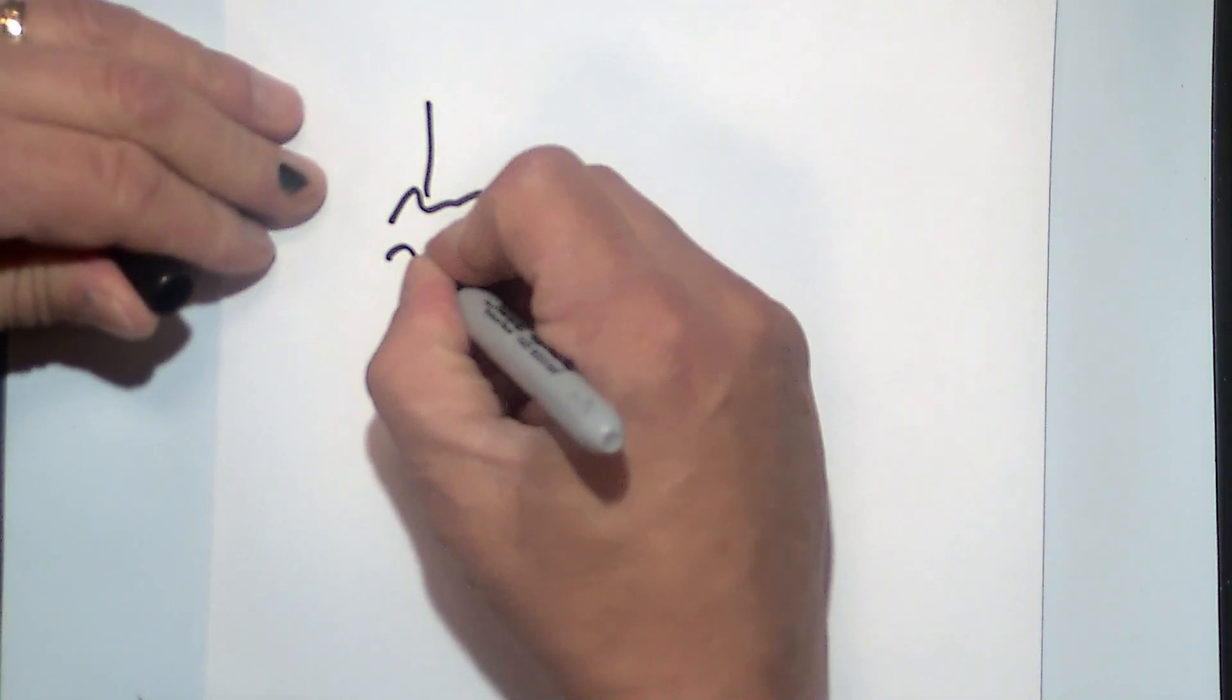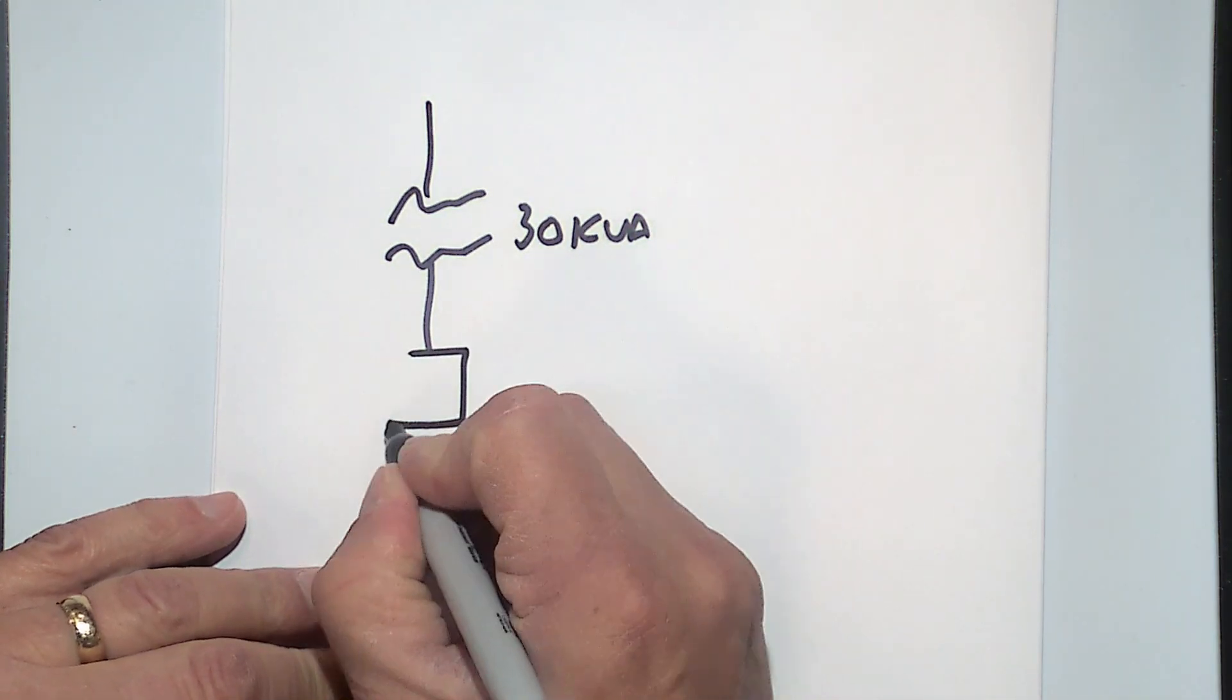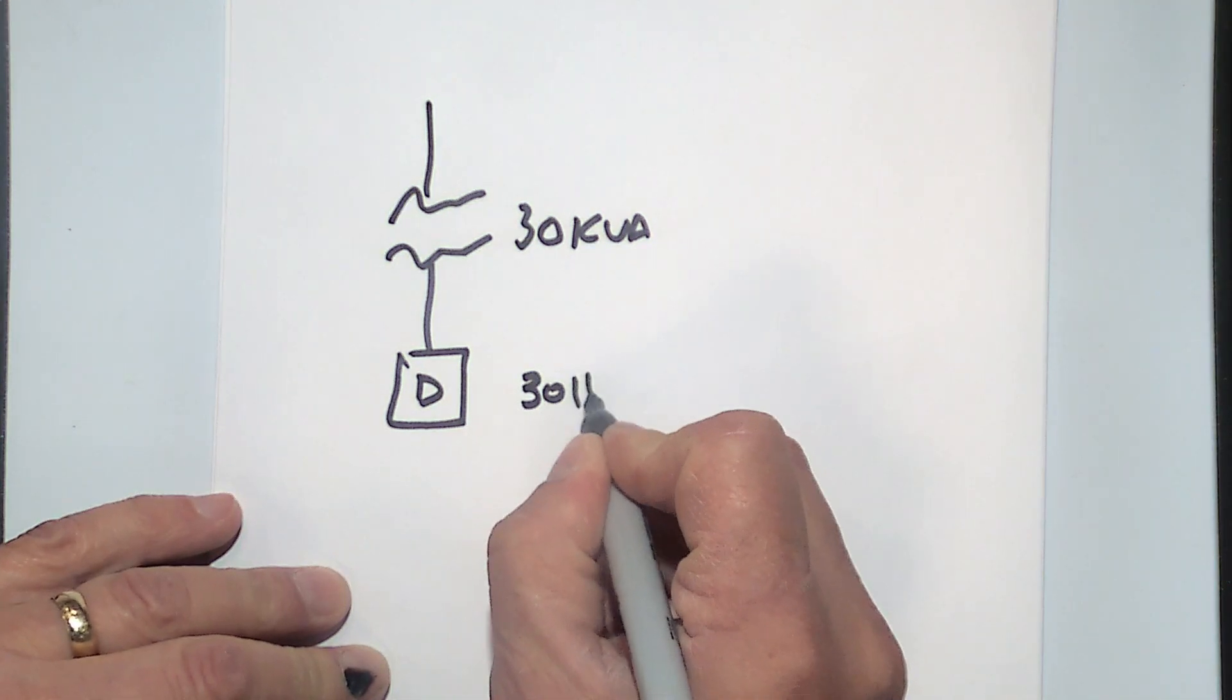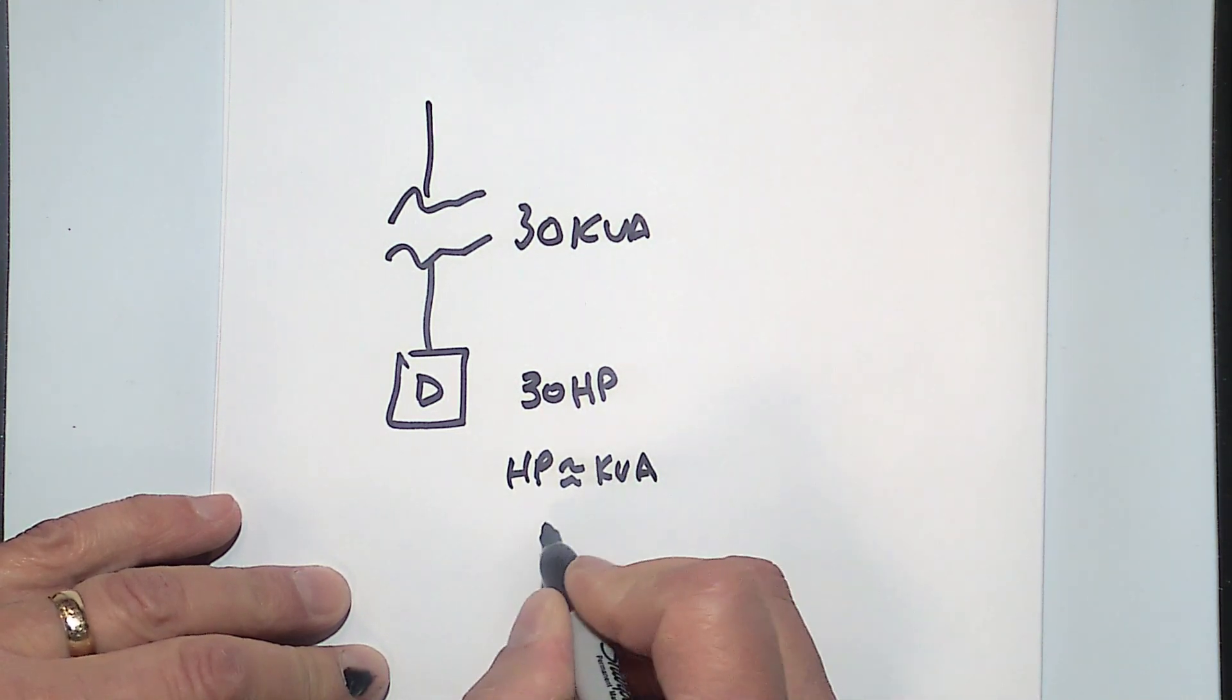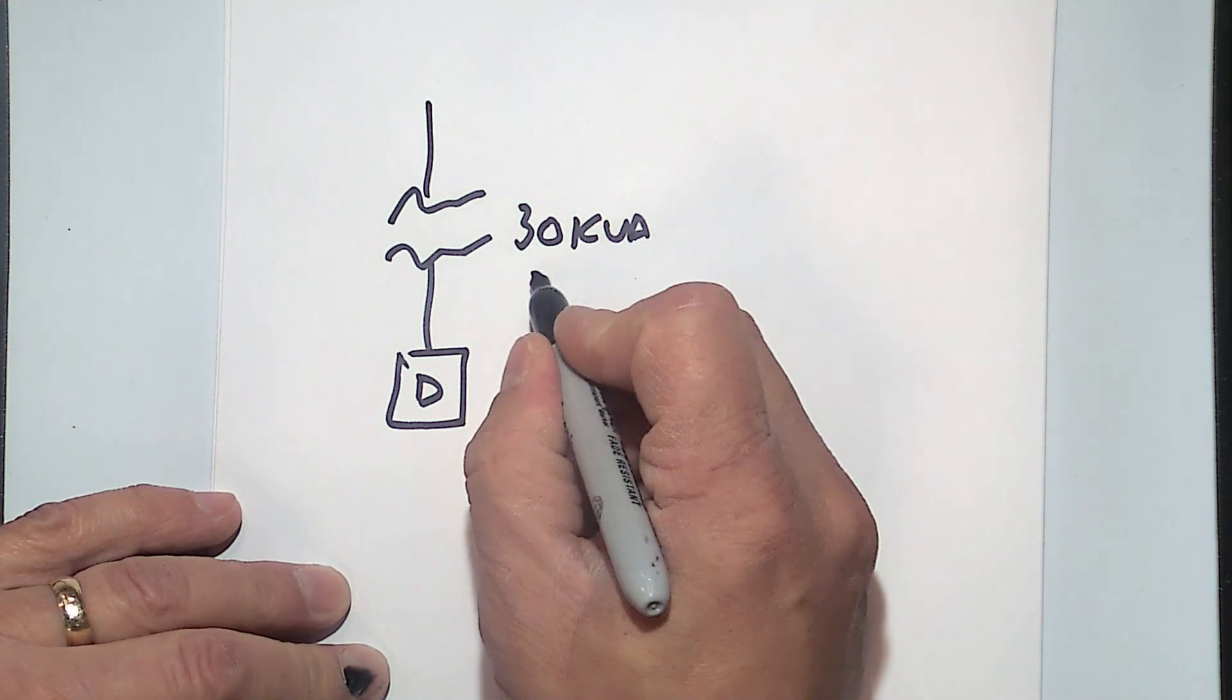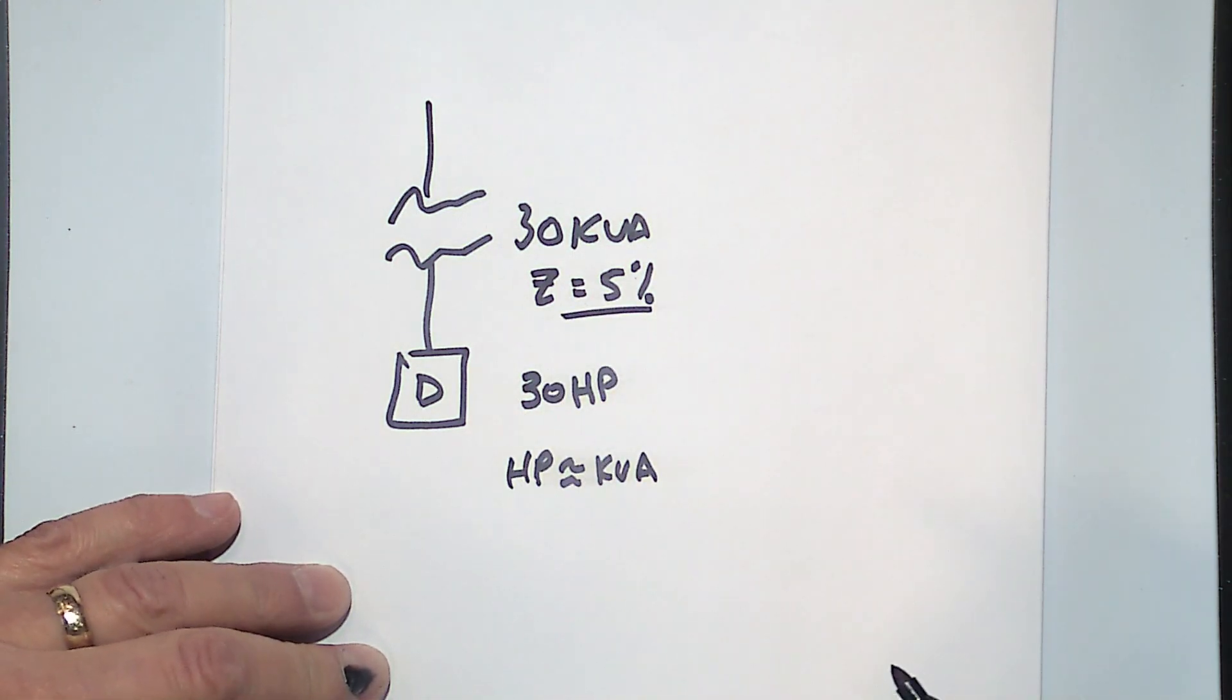So if I have a transformer, let's say it's a 30 kVA transformer, and I have a drive. And let's say that drive is 30 horsepower. Well, horsepower is about equivalent to kVA. So if I have 30 horsepower, I have about 30 kVA. Now, if this impedance or Z is 5%, then I effectively have about a 5% line reactor because most of that impedance is inductance.